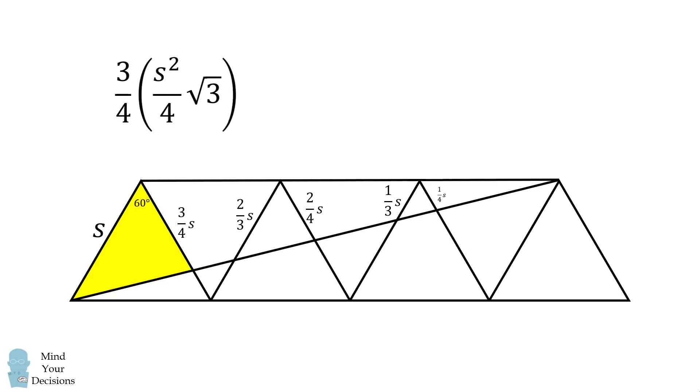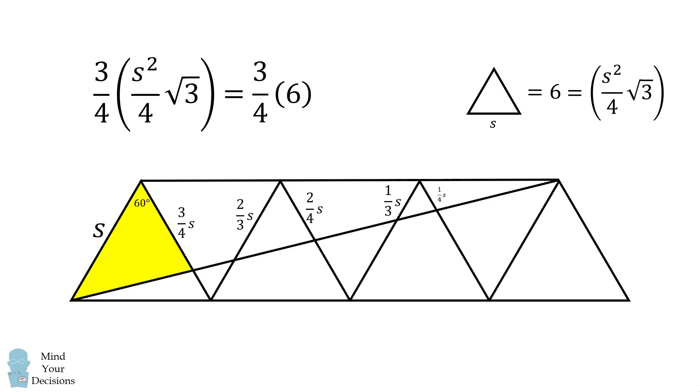We also have the area of a single equilateral triangle is equal to 6, and that's equal to s squared over 4 multiplied by the square root of 3. Thus, we can substitute in 6 for that part, and we get the area of the large yellow triangle is equal to 3 over 4 multiplied by 6, which is equal to 4.5.